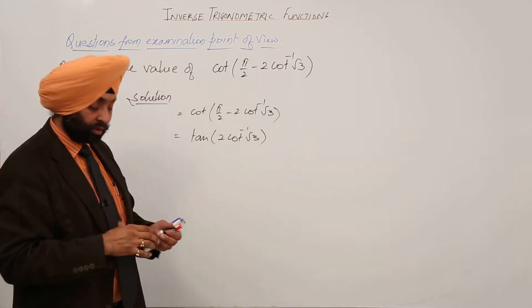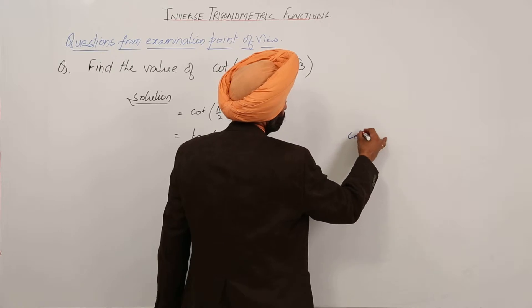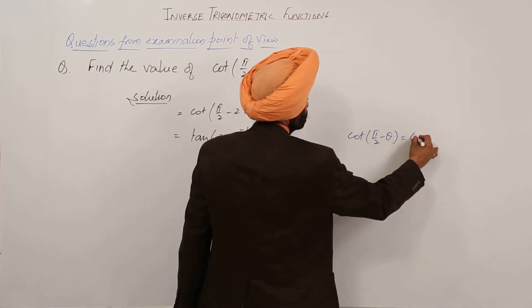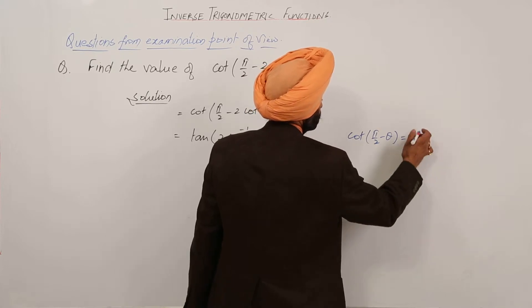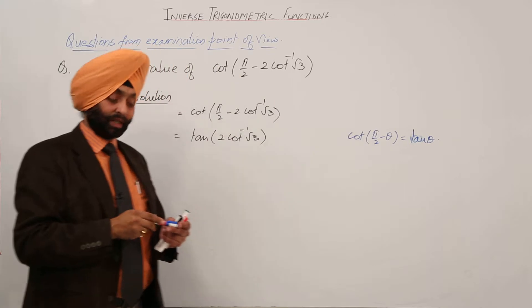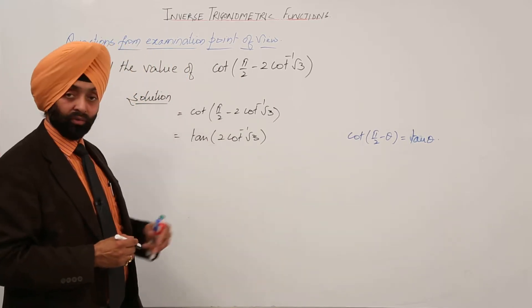What have we used here? We have used the identity cot(π/2 - θ) = tan(θ). So using this identity, we are getting tan(2cot⁻¹√3).